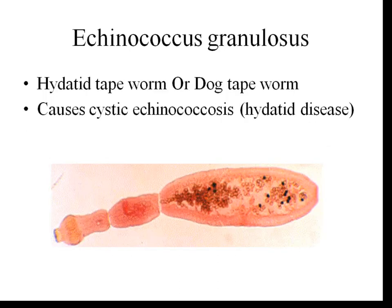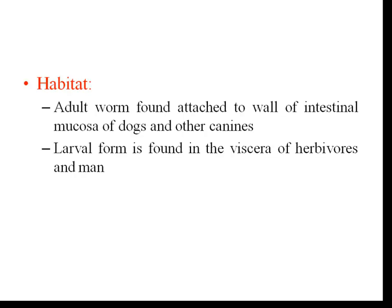Echinococcus granulosus is also known as hydatid tapeworm or dog tapeworm, because the definitive host for this tapeworm is the dog. It causes cystic echinococcosis or hydatid disease. The adult worm lives in the small intestine of dogs and other canines. Dogs act as the definitive host. The larval form of the parasite resides in the viscera of herbivorous animals.